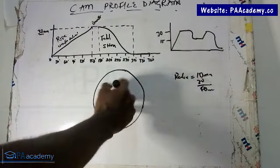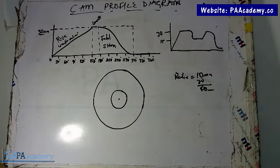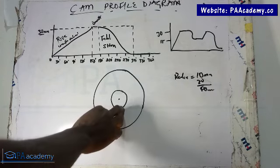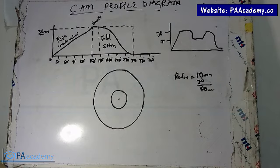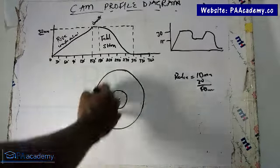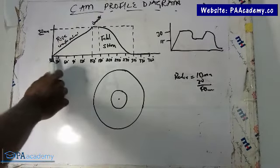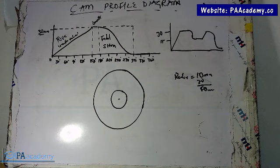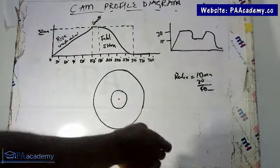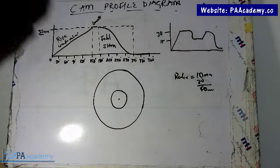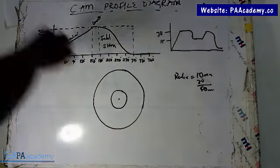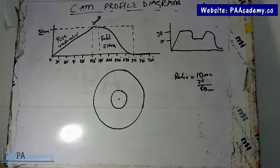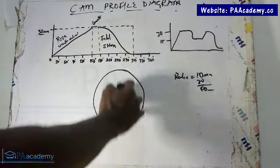The next step is to divide the circle into 12 divisions, because we have 12 divisions on the displacement diagram. That depends on how many divisions you used — if you used 12, divide the circle into 12; if you used 6, 8, or 18, divide accordingly. To divide your circle into 12, draw a vertical line and a horizontal line through the center, making sure it is accurate.